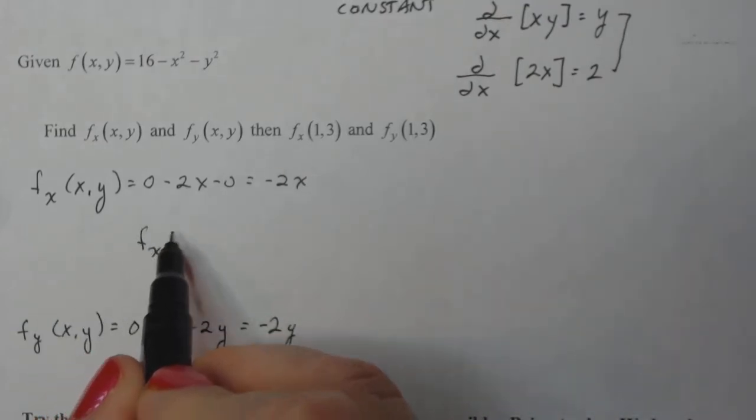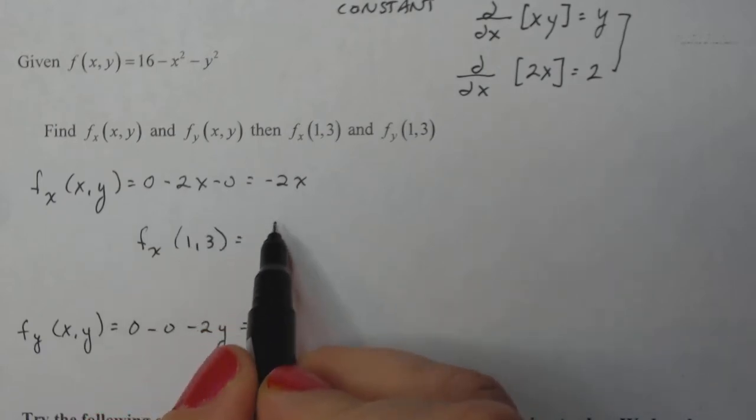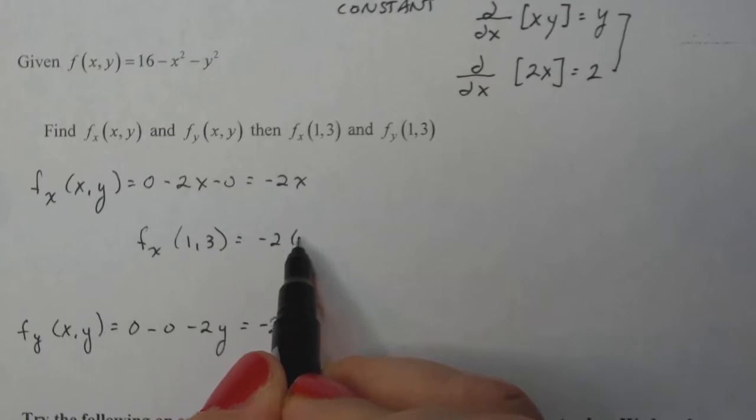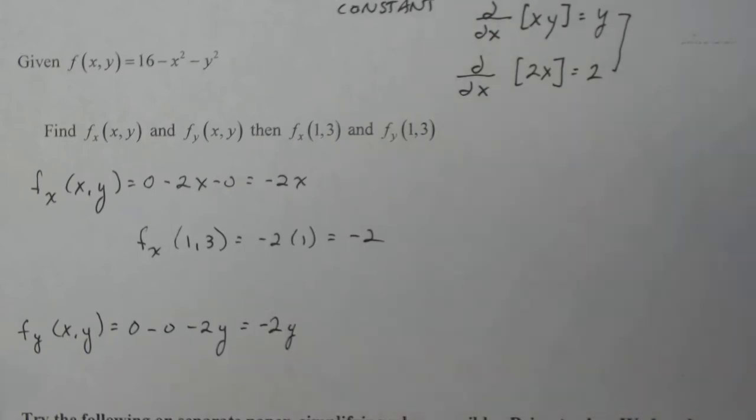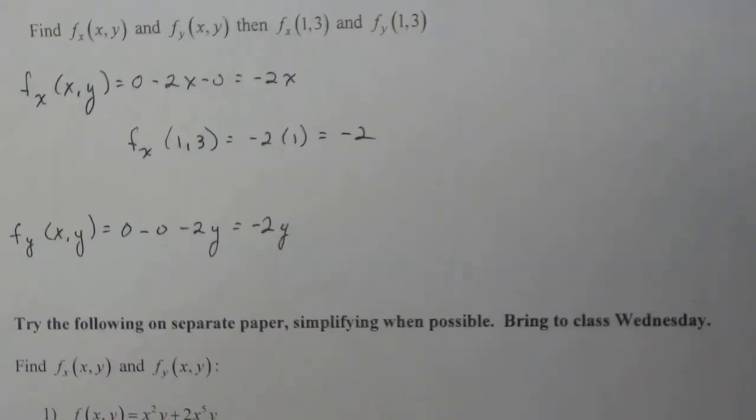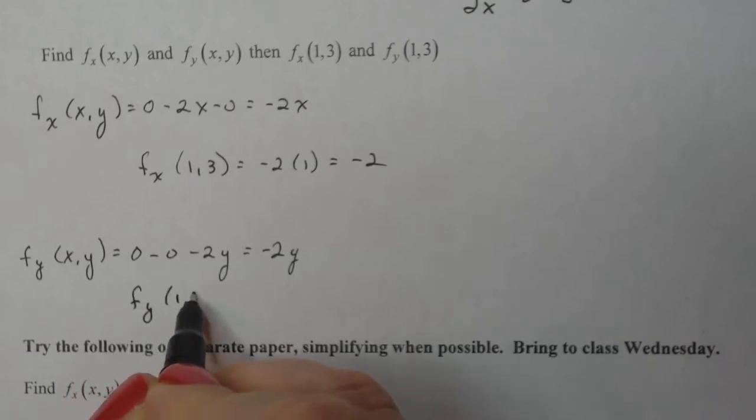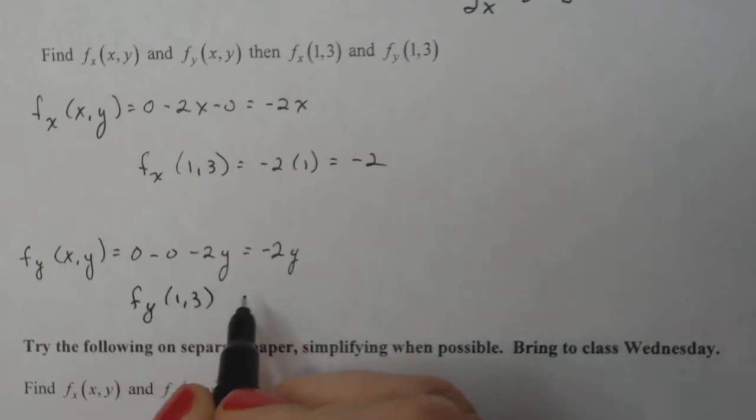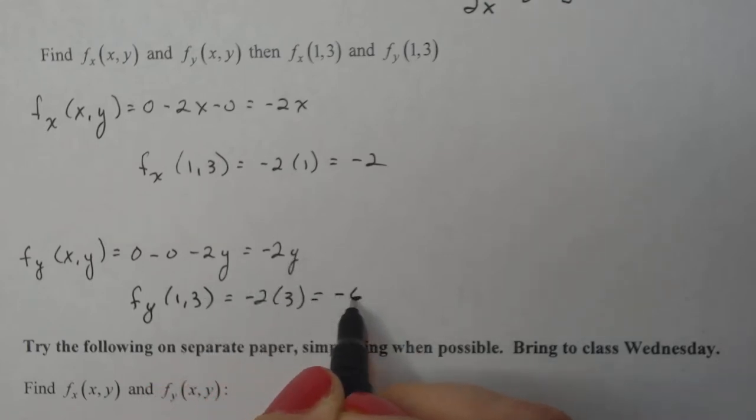So let's actually calculate f sub x at 1, 3. Well, f sub x at 1, 3, x is 1, so that's minus 2 times 1, minus 2. That's pretty darn close to our estimate that we had earlier, using a small h. And then if I do f sub y of 1, 3, that gives me minus 2 times—now I need the y value here—3, minus 6. And again, that is pretty close to what our estimate was.